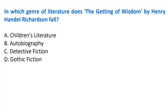Next question: 'In which genre of literature does The Getting of Wisdom by Henry Handel Richardson fall?' Options: A) Children's literature, B) Autobiography, C) Detective fiction, D) Gothic fiction. The correct answer is Option A - this is children's literature. The Getting of Wisdom by Henry Handel Richardson belongs to the children's literature category.